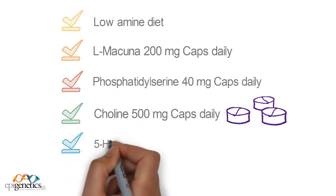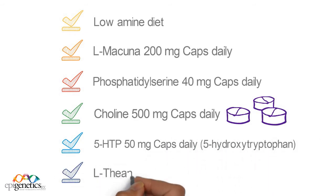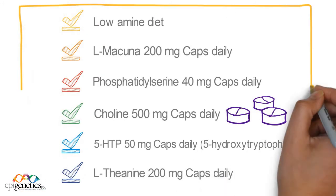Lastly, a 5-HTP 50 milligrams capsule per day and L-theanine 200 milligrams capsules per day are prescribed to balance his inhibitory neurotransmitters.